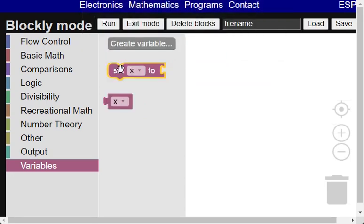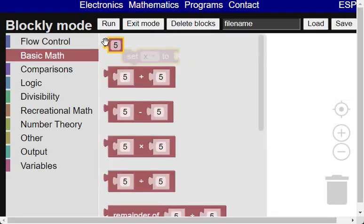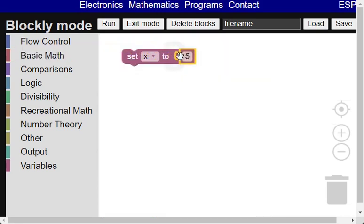Now we drag the set variable block to the workspace. The workspace will hold all the blocks that form the program. Then we drag the number that is in the basic math category. We have to insert the tab of the number block in the notch of the set variable block. Then we change the number to 3, which is the first odd prime number.